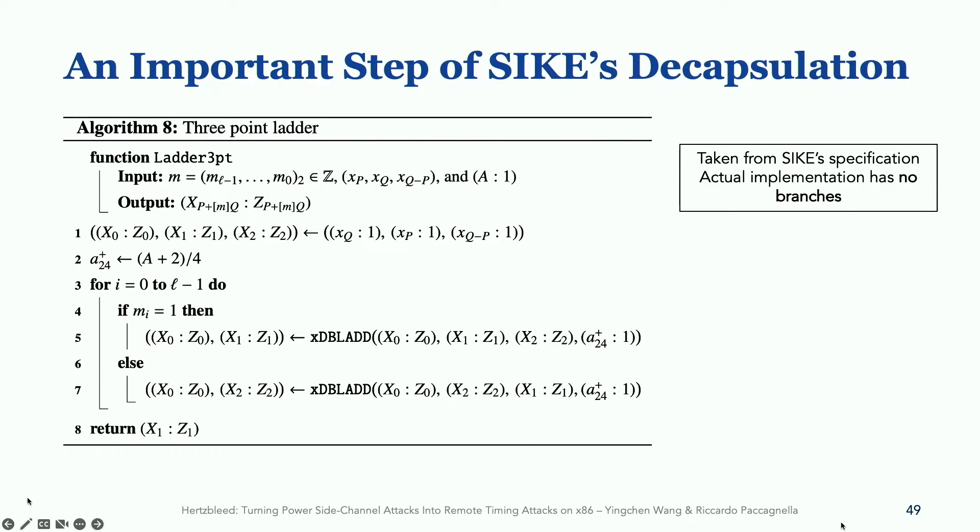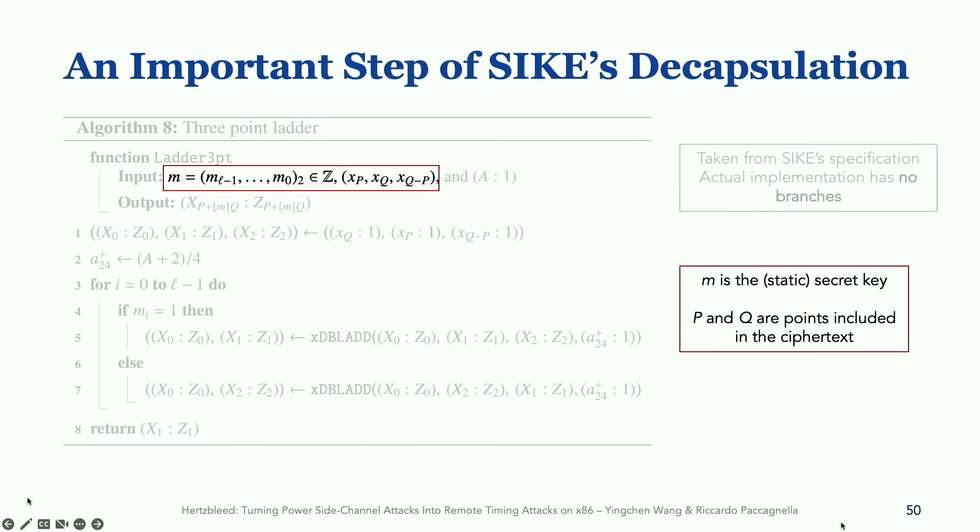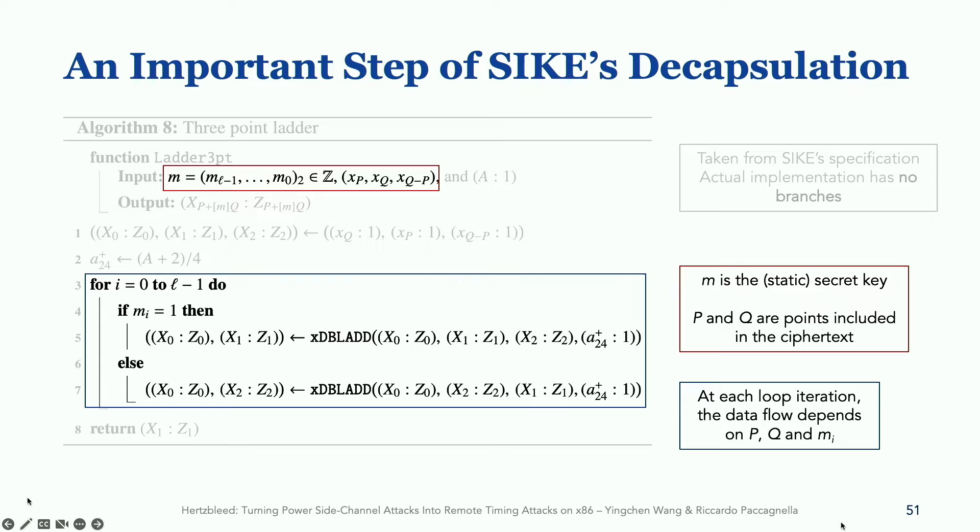Now, let's dig deeper into this decapsulation algorithm. We focus on the very first function called by this algorithm, called three-point ladder. The input to this function is a secret key M, as well as the cipher text, which consists of xP, xQ, and xQ minus P. This algorithm loops the secret key bit by bit, and in every loop iteration, it has a data flow depending on the current secret key bit, MI, as well as the cipher text.